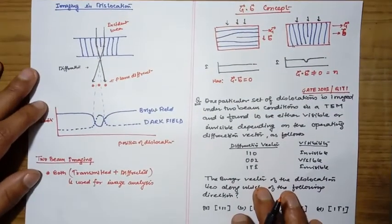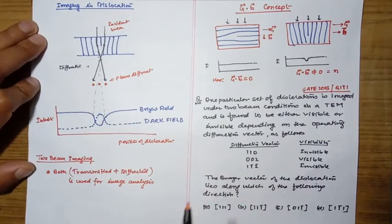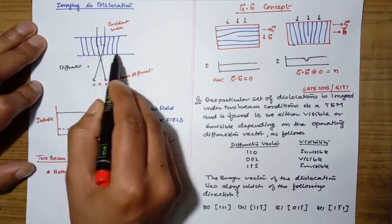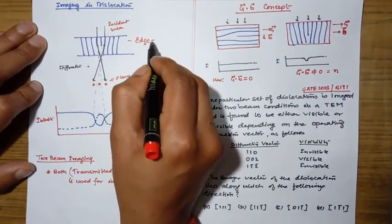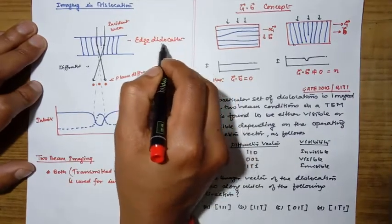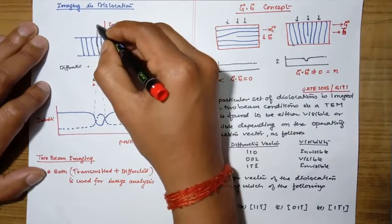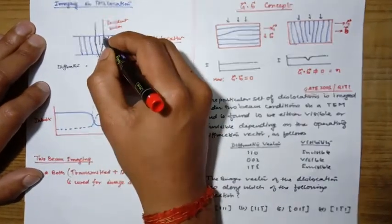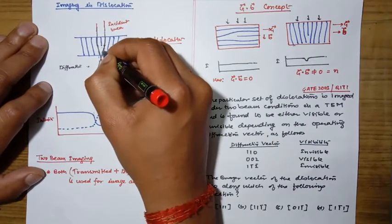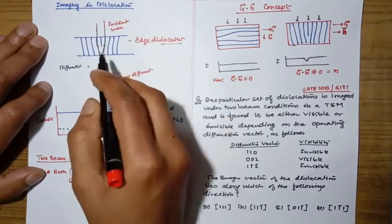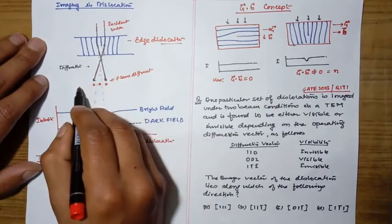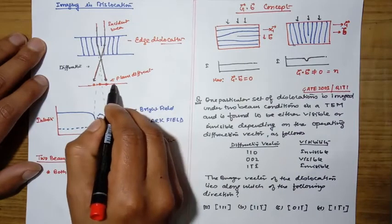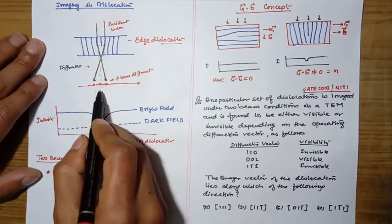Now coming to dislocation imaging. This diagram shows an edge dislocation. The electron beams fall on the sample, and at certain locations diffraction takes place. The diffracted beams are allowed to fall on the image plane, and an image is generated. We then analyze the intensity of this beam according to the position of the dislocation.